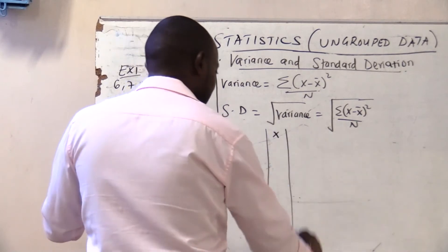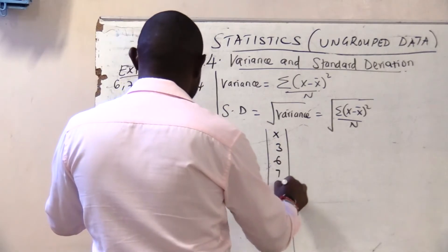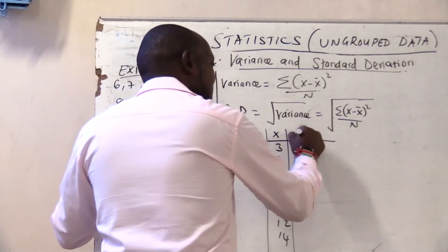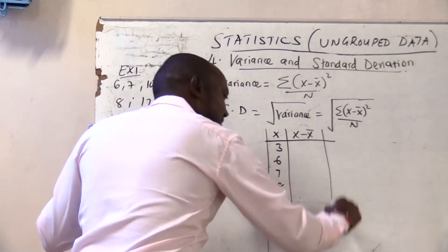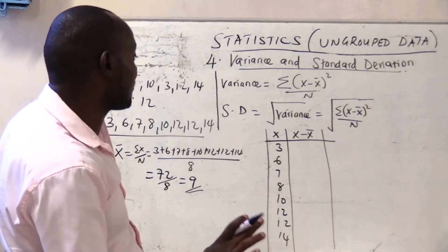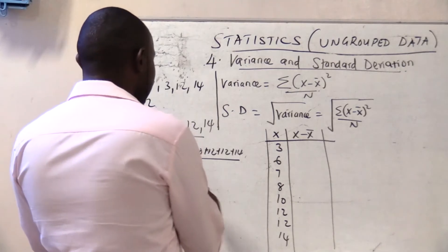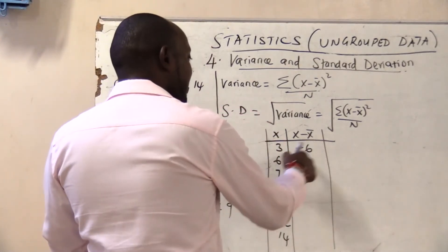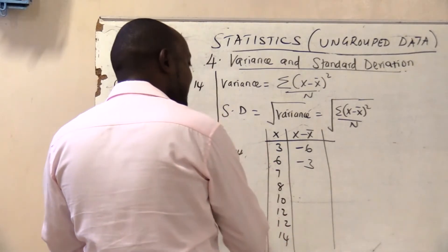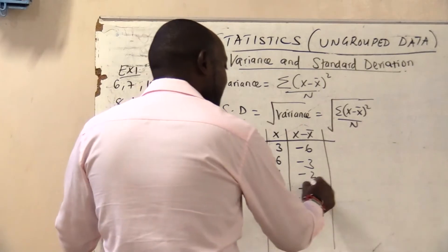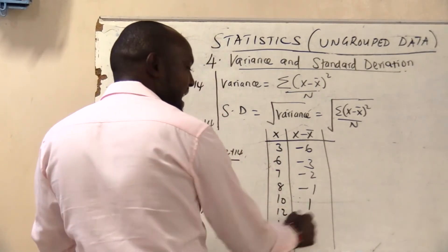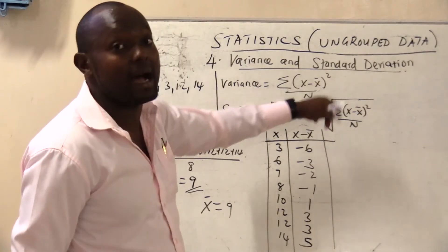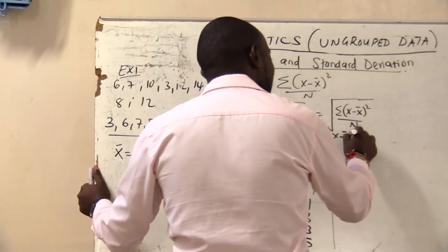Let me write column x with the data: 3, 6, 7, 8, 10, 12, 12, and 14. Now I need x minus the arithmetic mean. My mean is 9. So: 3 − 9 = −6; 6 − 9 = −3; 7 − 9 = −2; 8 − 9 = −1; 10 − 9 = 1; 12 − 9 = 3; 12 − 9 = 3; 14 − 9 = 5. In the formula I need (x − x-bar) squared, so I must square each of these values.